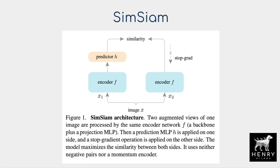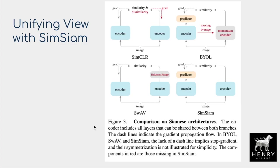The core idea in SimSiam is that you don't need any negatives, a momentum encoder, or a clustering algorithm. All you need is this simple framework and the stop gradient operation going back through the Siamese copy of the encoder network. This image shows a unifying view of the simple Siamese architecture alongside SimCLR, Bootstrap Your Own Latent, and the SWAV clustering algorithm.